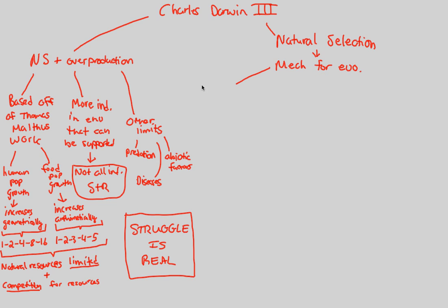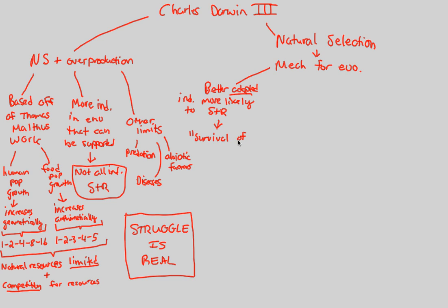What does natural selection state? It states that better adapted individuals are more likely to survive and reproduce. Better adapted individuals — those who have the best variation — are more likely to survive and reproduce. This is the idea behind the term you've heard, actually quite wrongly for many years: survival of the fittest.